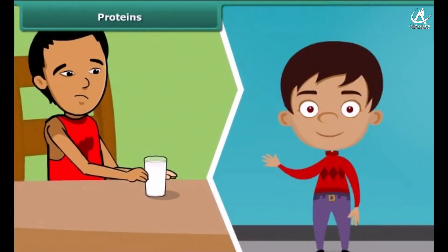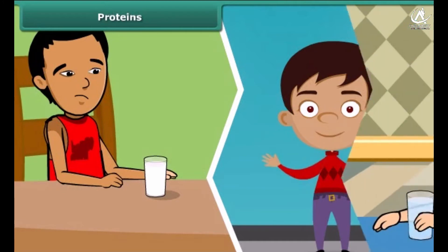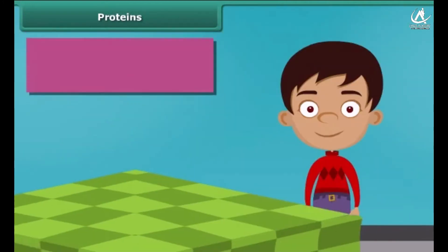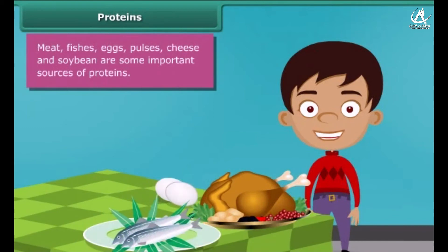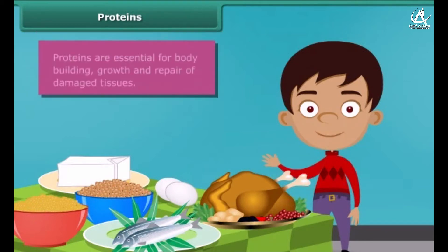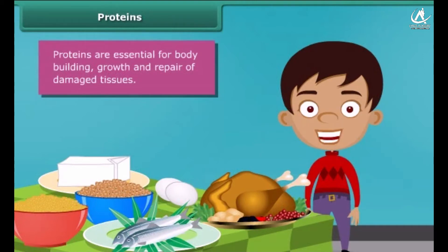You might have noticed that some children who do not drink milk become weak and are underdeveloped because milk contains required proteins for our growth. Meat, fishes, eggs, pulses, cheese and soybean are some other important sources of proteins in our diet. The major role of proteins is building and repairing of damaged tissues. Along with carbohydrates, they are also a source of energy.